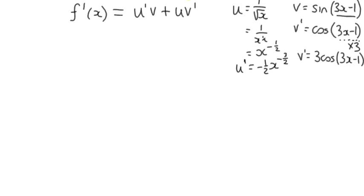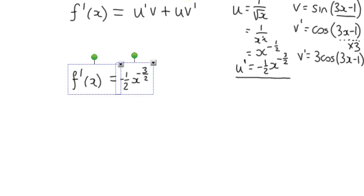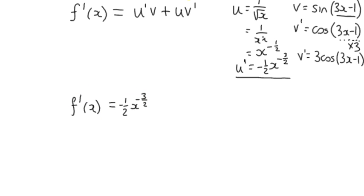So we know that we're looking for u dash v plus u v dash. So the derivative of the function f of x is calculated by taking u dash or u prime, which is negative 1 half x to the power negative 3 over 2. I'll move it down a little bit. Multiplied by v, which is the sine of 3x minus 1.